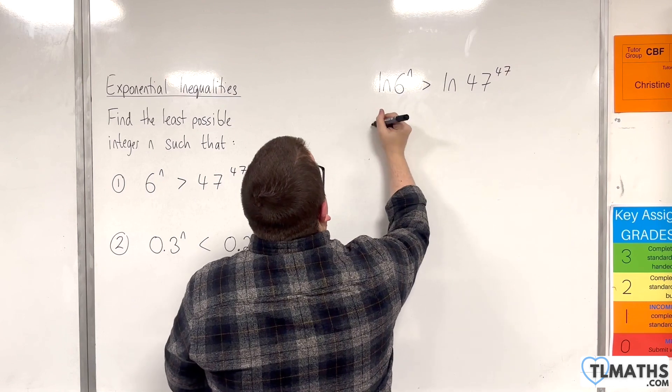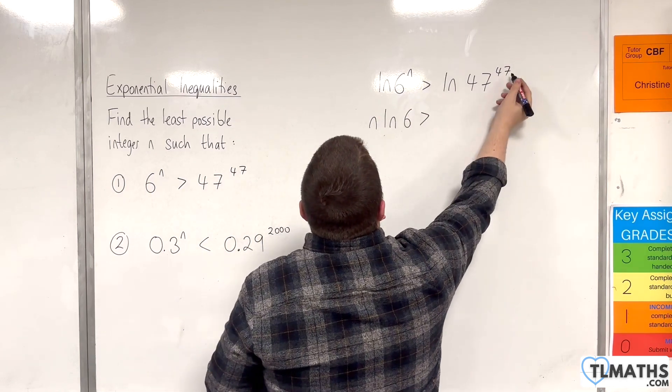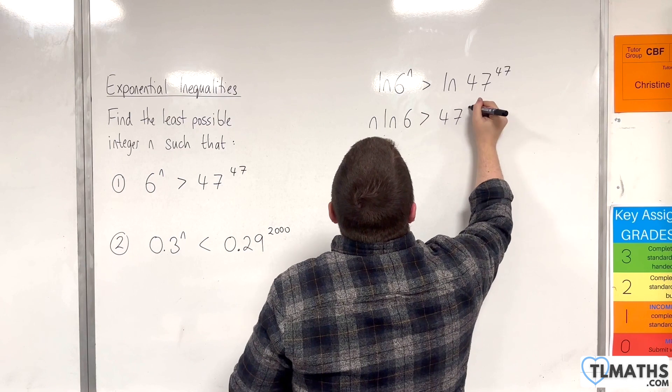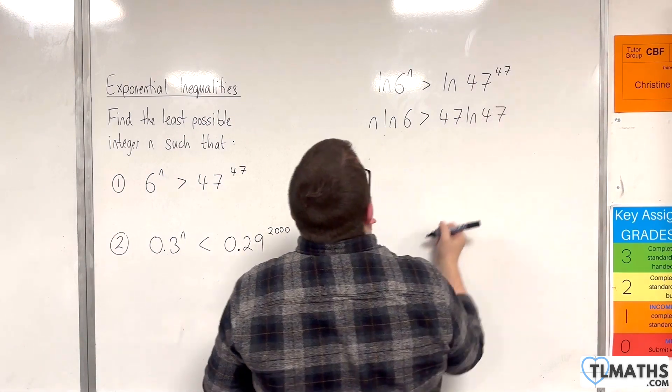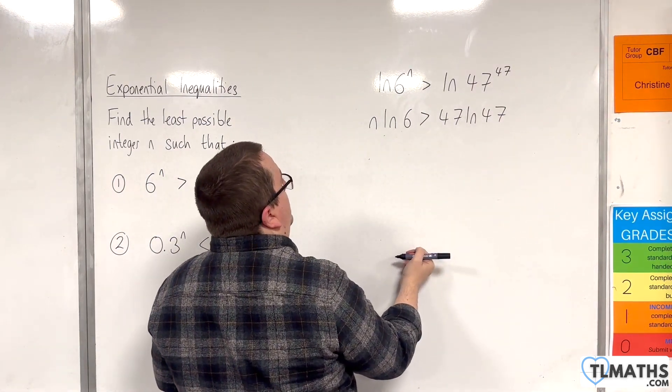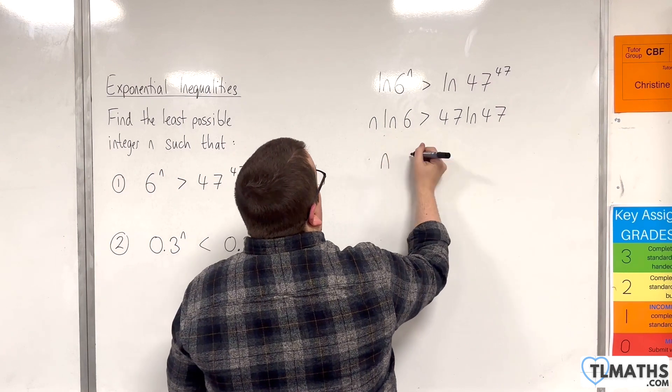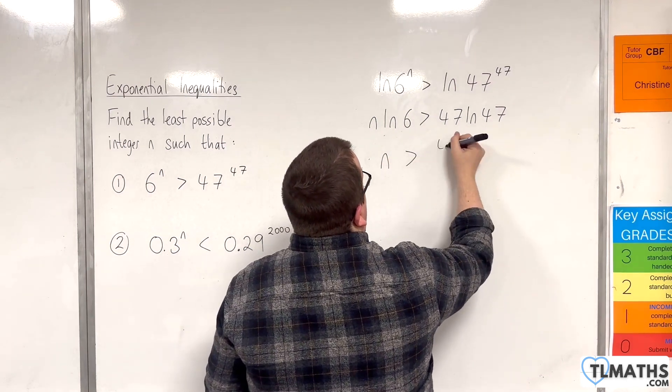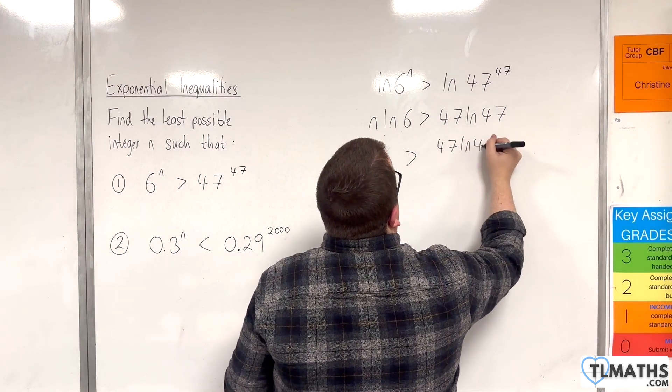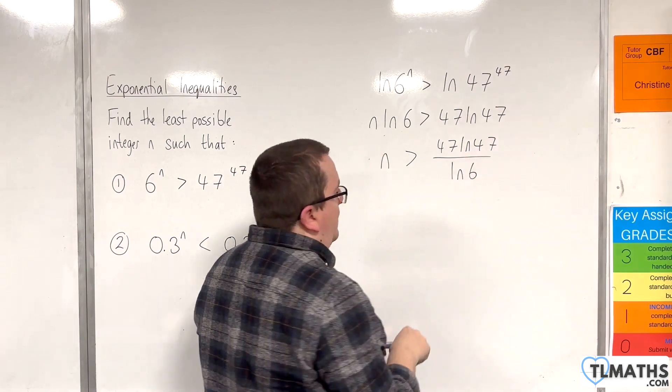Bring the n down to the front, so use the power rule, and bring the 47 down to the front. And then divide both sides by the natural log of 6, which is a positive number, so it's not going to change the direction of the inequality. So we get that.